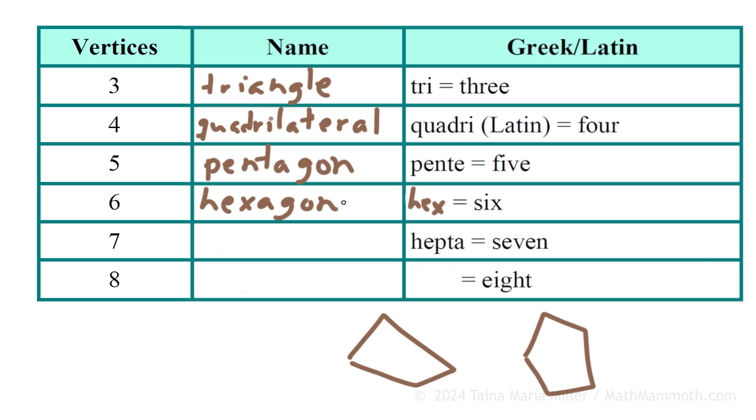And then next one, hepta. Hepta means seven in Greek. Heptagon. And lastly, what word in Greek means eight? Well, do you know of an animal that has eight legs? Lives in the sea? Octopus. Octo. And so, octagon is then an eight-sided polygon.